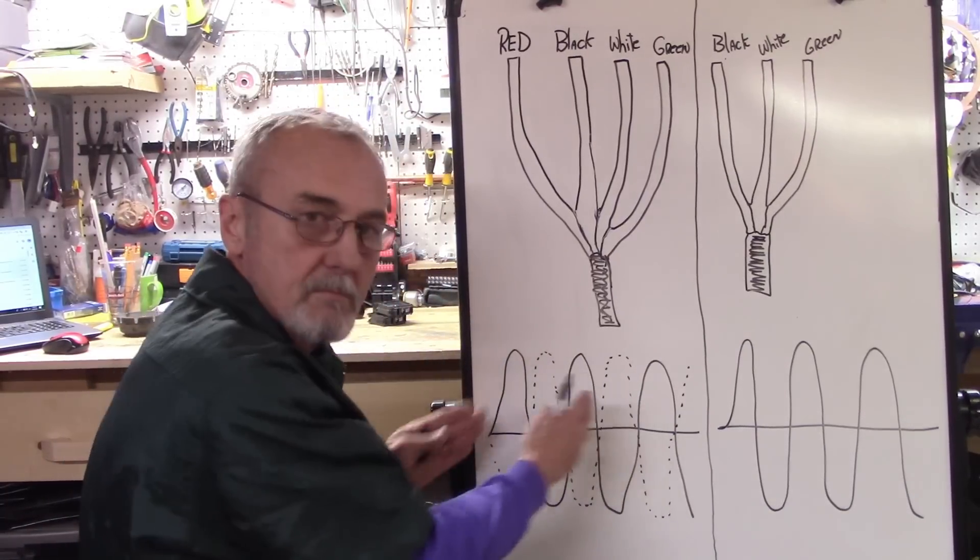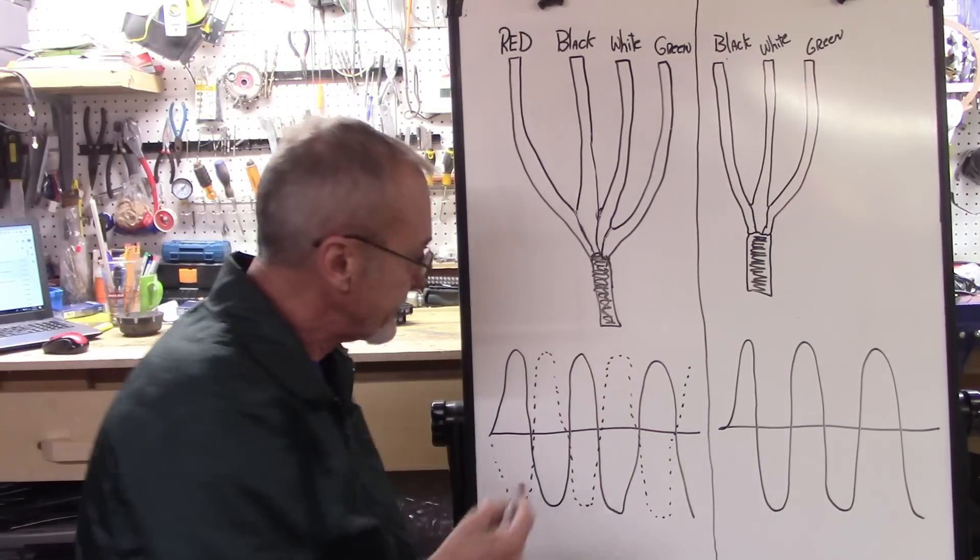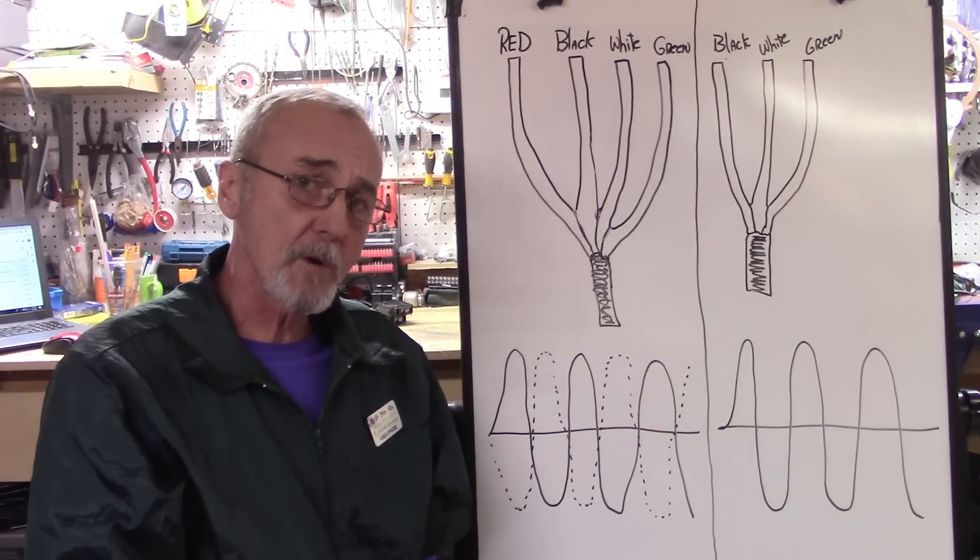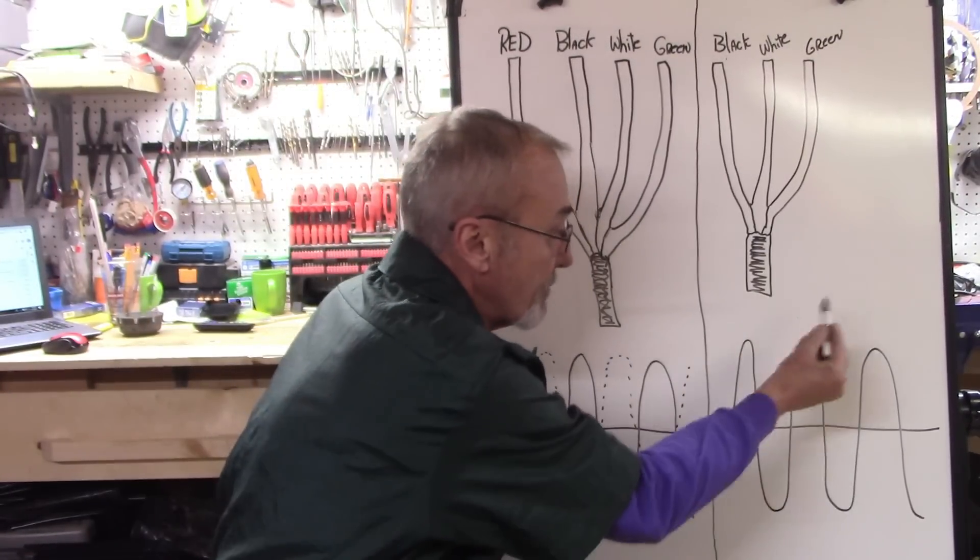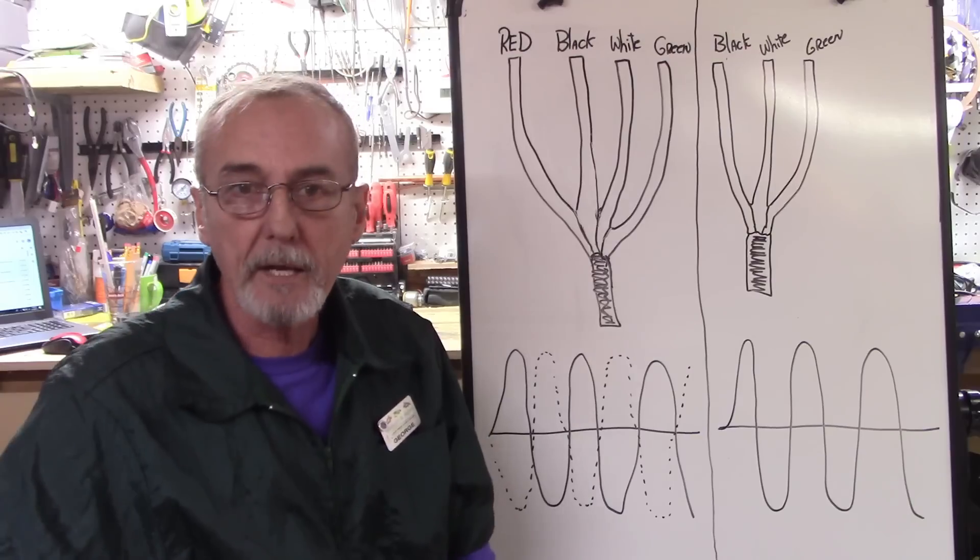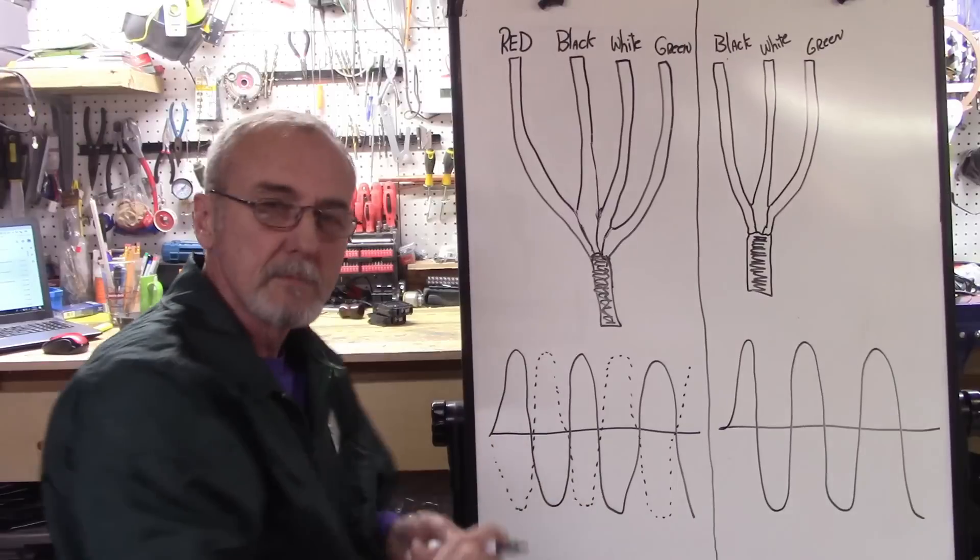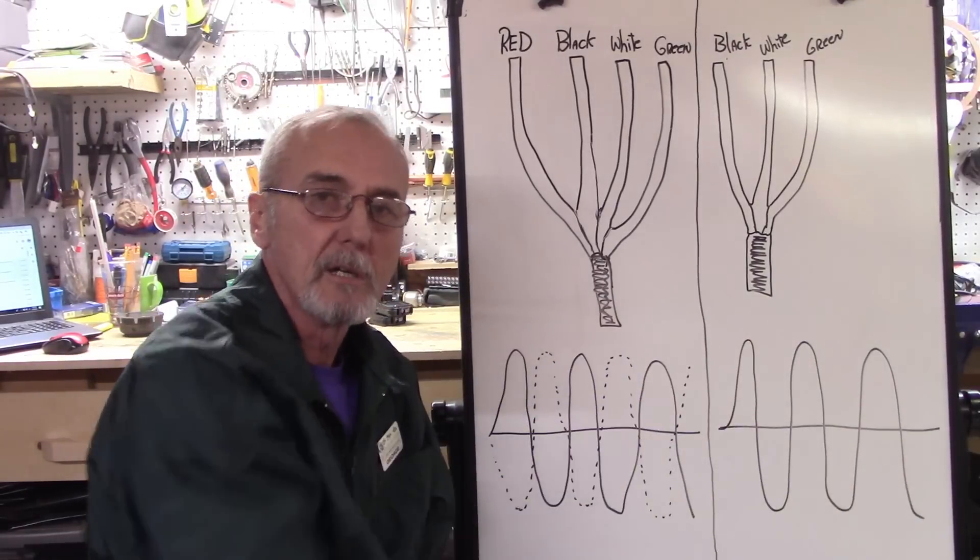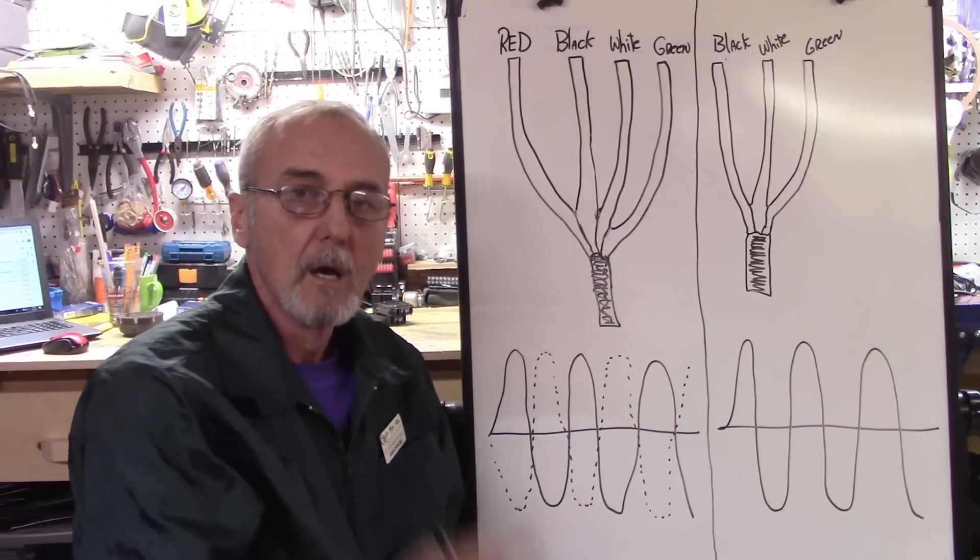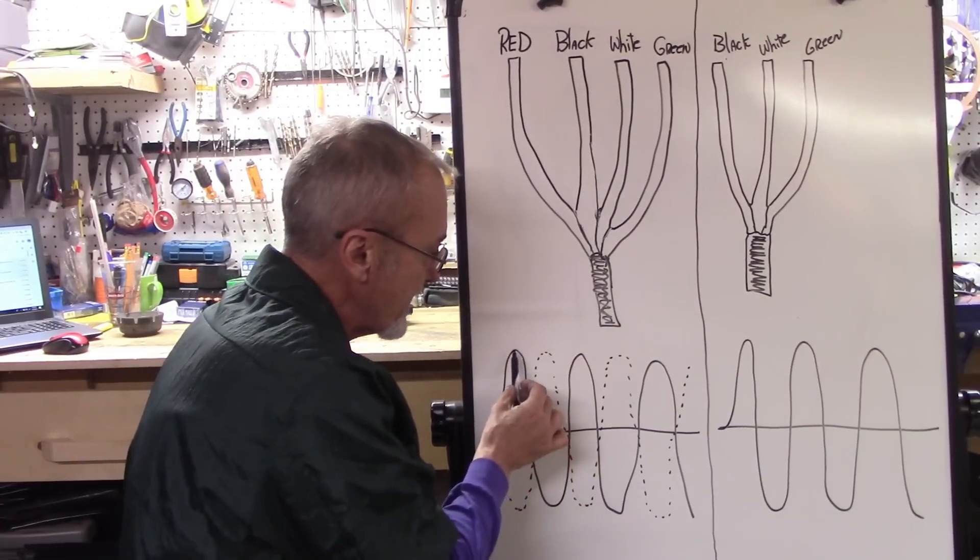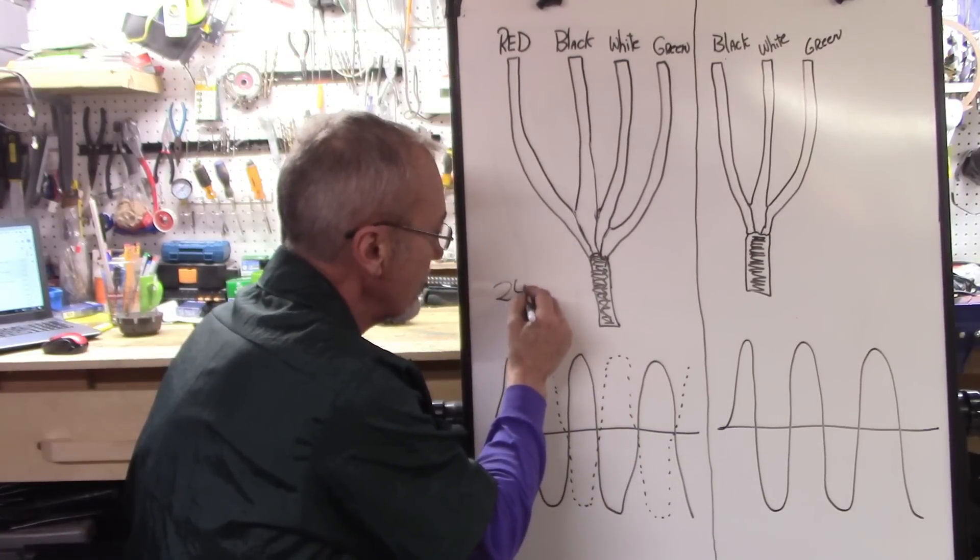The benefit of this, first of all, as opposed to this one, which is only a positive, negative, positive, negative, positive, 60 times a second, the benefit between these two, this one is you get a little bit smoother action of constant power, voltage. Plus, you can actually add these two peaks together to get 240 volts.